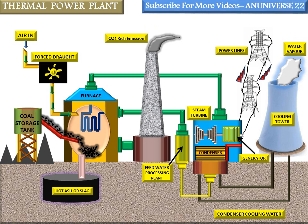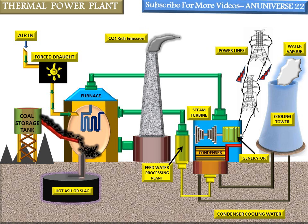Now we discuss the working of the thermal power plant. Coal from the storage tank is fed to the boiler through the coal handling equipment for the generation of steam. Ash produced due to the combustion of coal is removed to ash storage through the ash handling system. Air is supplied to the combustion chamber of the boiler either through the forced draught or induced draught fan, or by using both. The dust from the air is removed before supplying it to the combustion chamber.